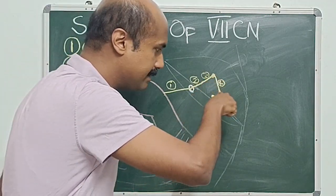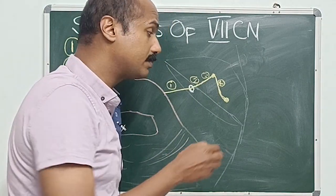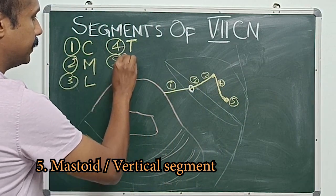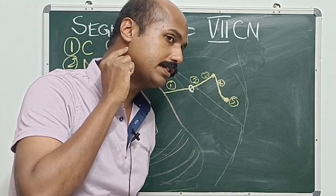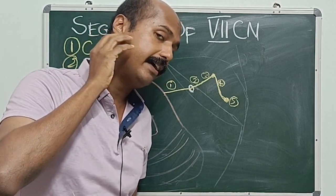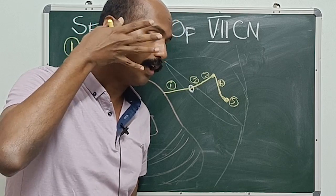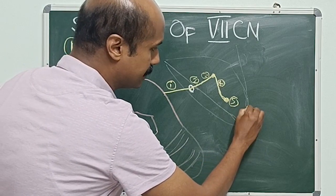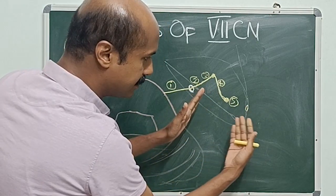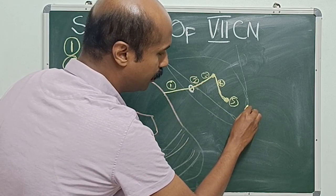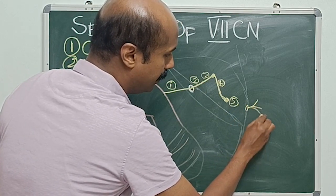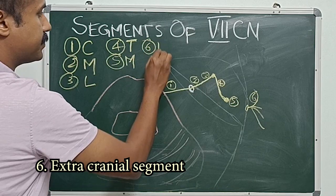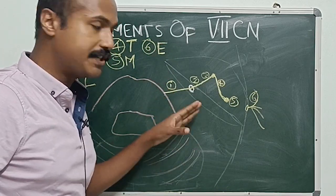The descending portion is also called the mastoid segment — that is the fifth segment, the vertical or mastoid segment. The mastoid segment continues to the stylomastoid foramen, after which there is the extracranial course where you have the five terminal branches. From the stylomastoid foramen, you have the sixth segment — the extracranial segment.